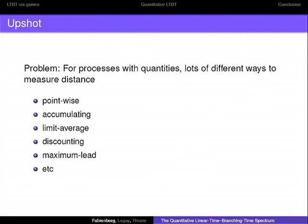The huge problem in this context is that once you start to consider quantities, there is a host of different ways of actually measuring your distances. Depending on your application, you might want to measure pointwise distances in your systems. You might want to accumulate your differences over time if you are considering energy consumption, for example. Once you accumulate, you might want to discount the future, so you can do discounted accumulating distances, or limit average distances. You can also do something called maximum lead distance, specifically for timed systems. So there is a host of quantitative ways of measuring things.